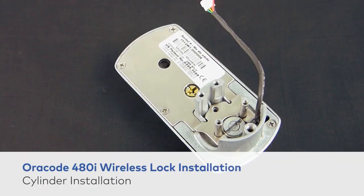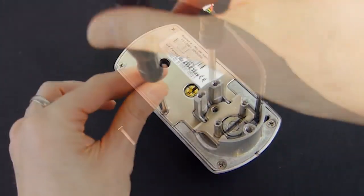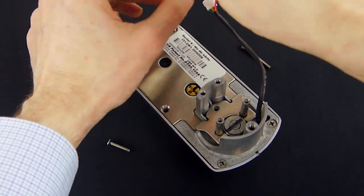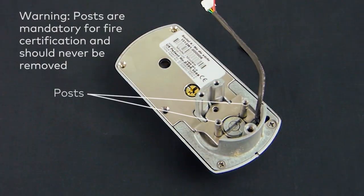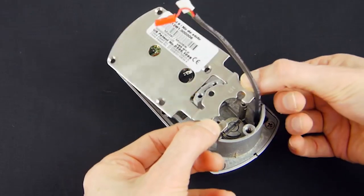If the cylinder is not already assembled in the lock, proceed as follows. First, remove the 4 screws from the backplate. If necessary, loosen the post to remove the backplate and continue by removing the backplate from the rear of the lock.